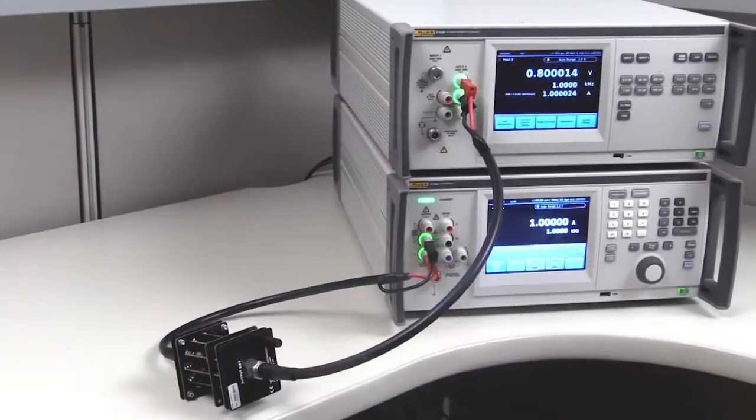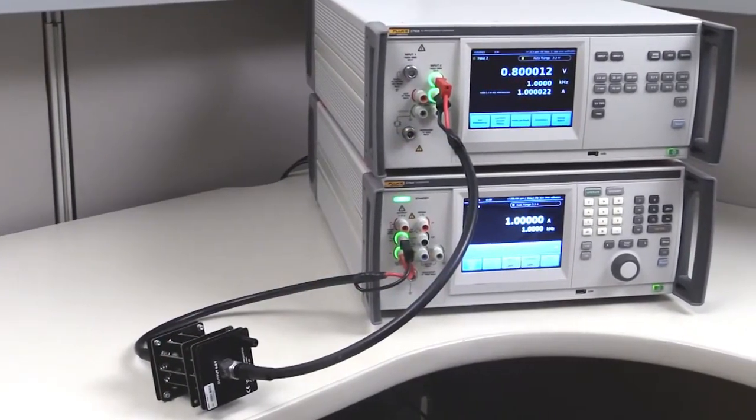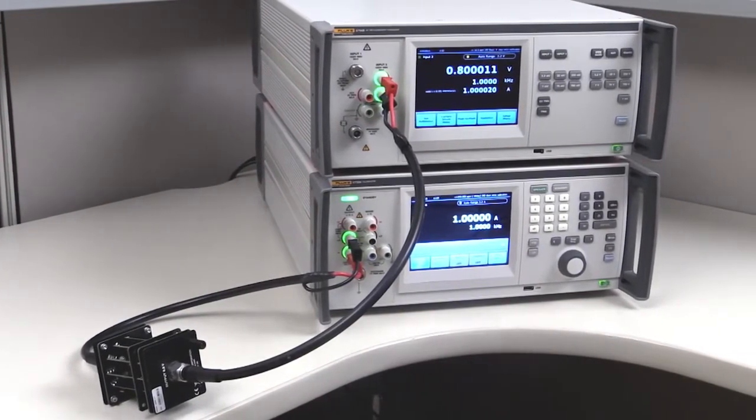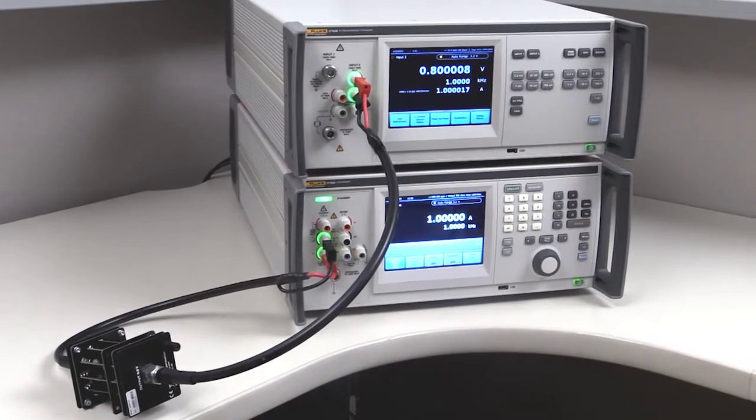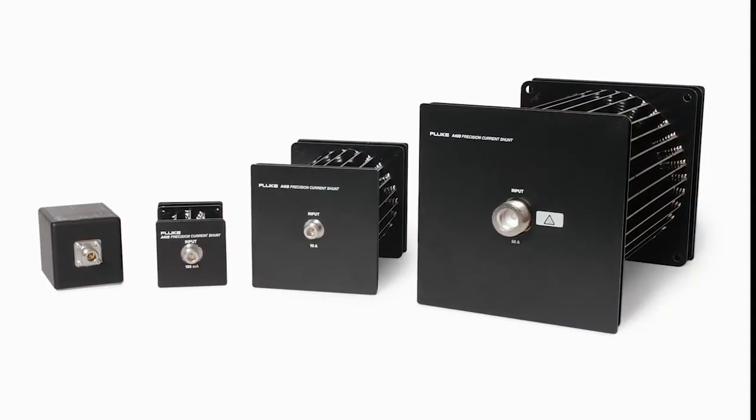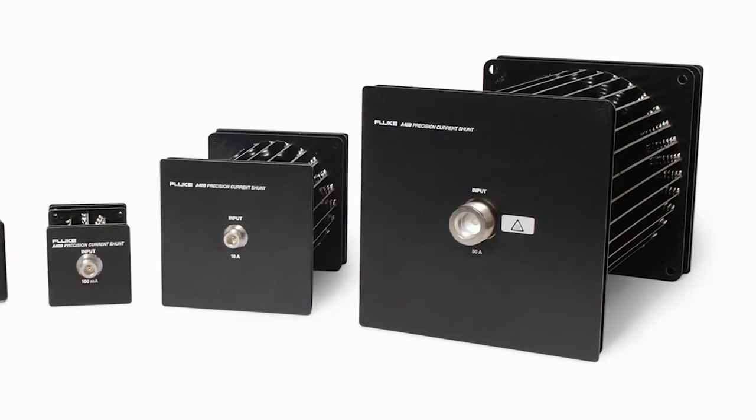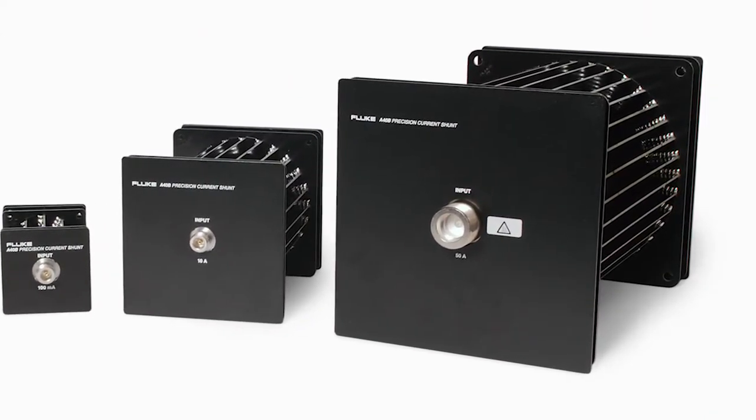The second major improvement is the 5790B's ability to make direct, absolute, or relative current measurements with current shunts without needing to make any calculations. The 5790B is optimized for use with the Fluke A40B current shunts up to 100 amps to make absolute and relative measurements.